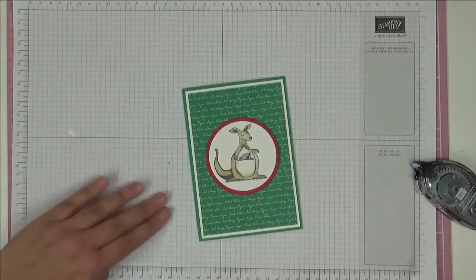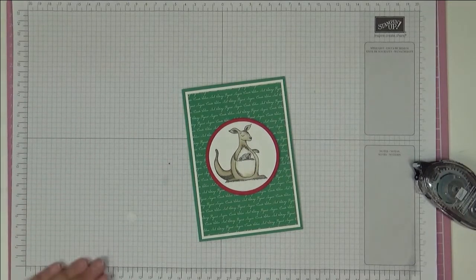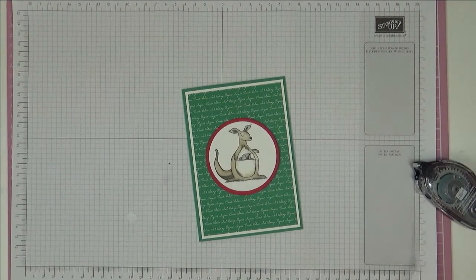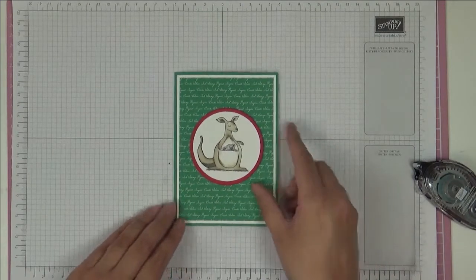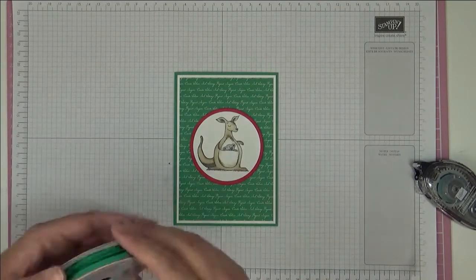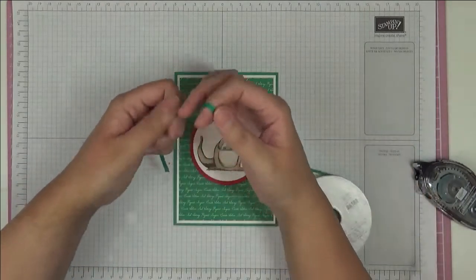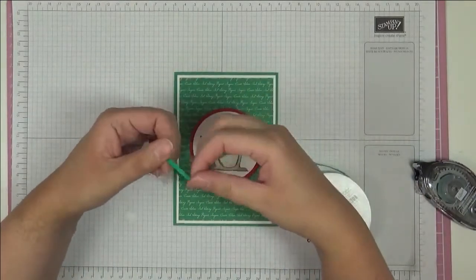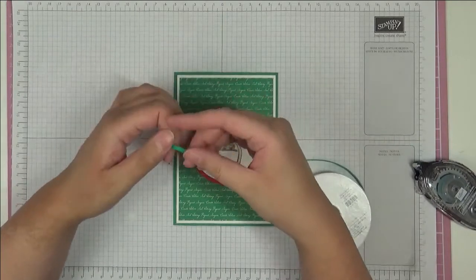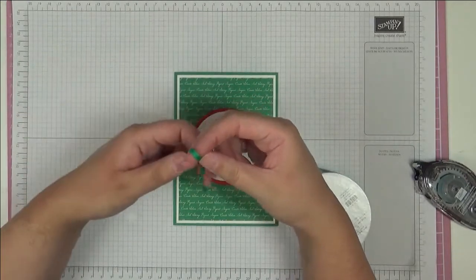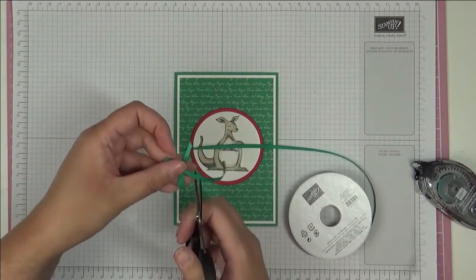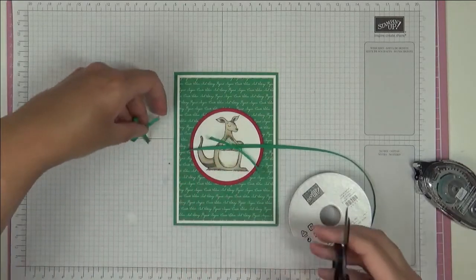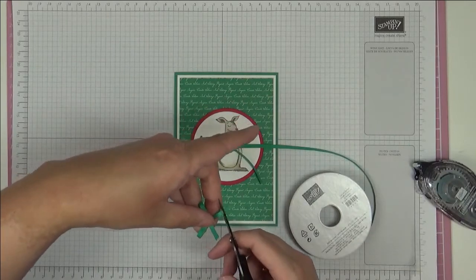And then get rid of these dimensional backings before they get in my way because they drive me mad. Okay, and then I've got some of the matching Call Me Clover mini grosgrain ribbon and I'm just going to attempt here to tie a bow. I'll accept that it's not too bad I don't think.